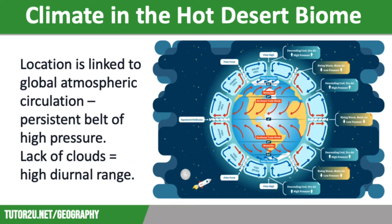The location of hot deserts can be largely explained by global atmospheric circulation. At these latitudes, air that has risen at the equator descends, forming a persistent belt of high pressure, which explains the lack of cloud and rain. Cloudless skies lead to high levels of insolation during the day, resulting in extremely high temperatures, but the lack of cloud cover also means temperatures can plummet to below freezing at night during the winter. Hot deserts therefore experience a huge diurnal temperature range — the difference in temperatures between day and night — which can exceed 35 degrees.